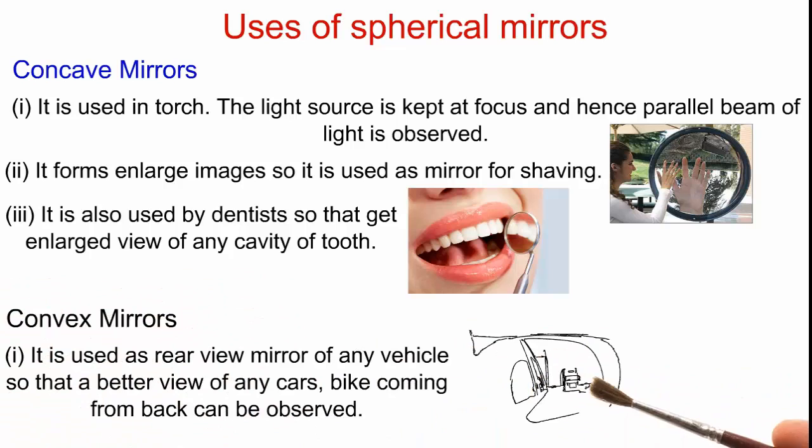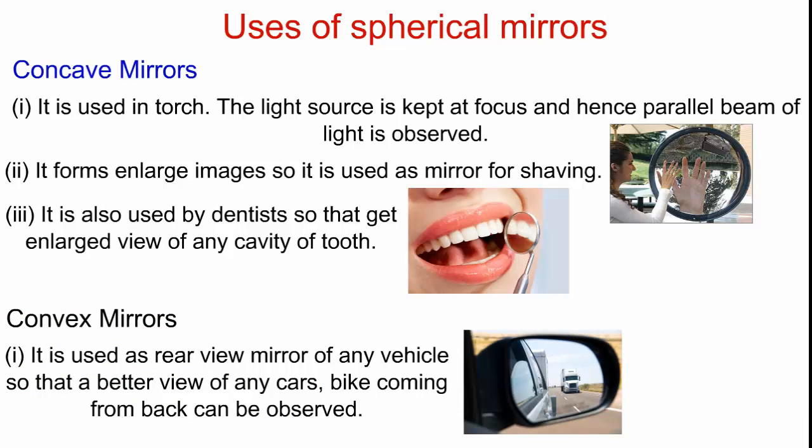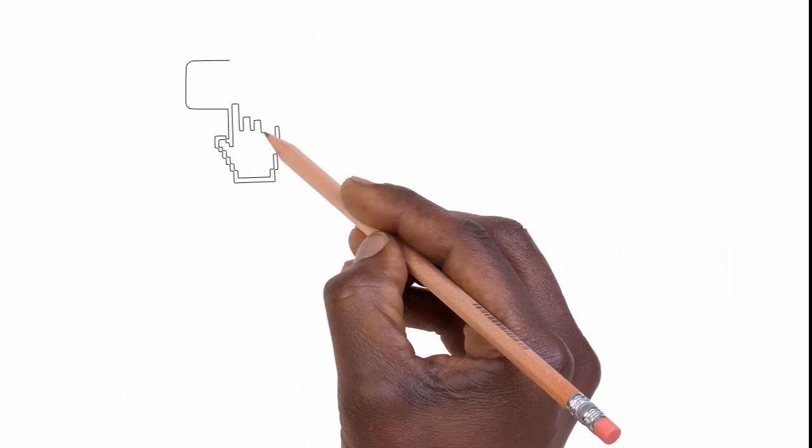Coming to use of convex mirror. It is used as rear view mirror in vehicles so that you can get a better view of any cars, bikes coming from back that can be observed properly and clearly.